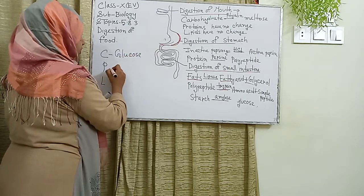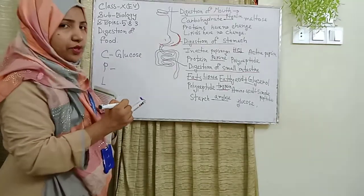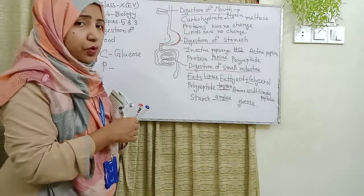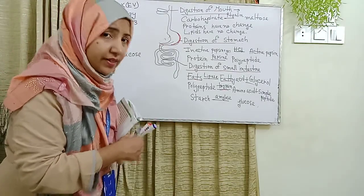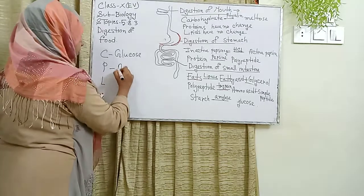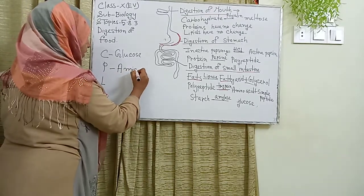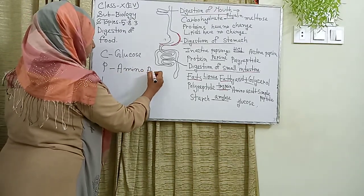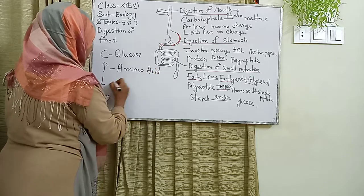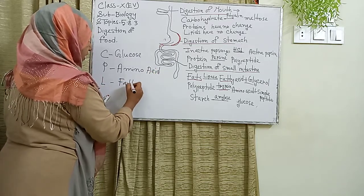Second structure is protein. Protein is a bond of polypeptides or amino acids. Third structure is lipid — lipid is composed of fatty acid and glycerol.